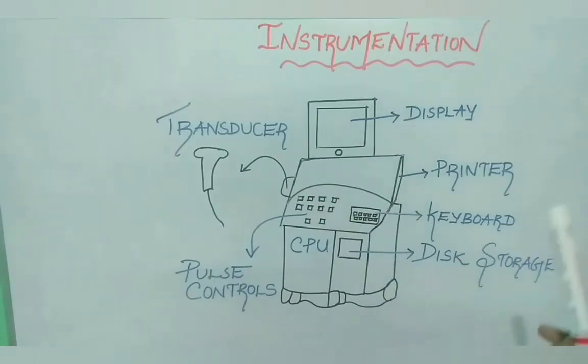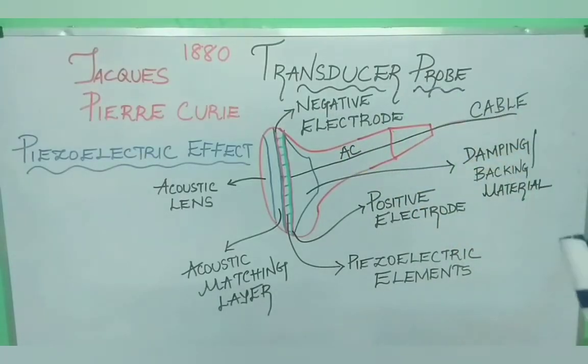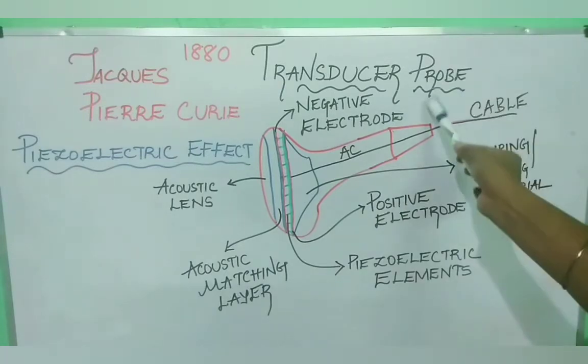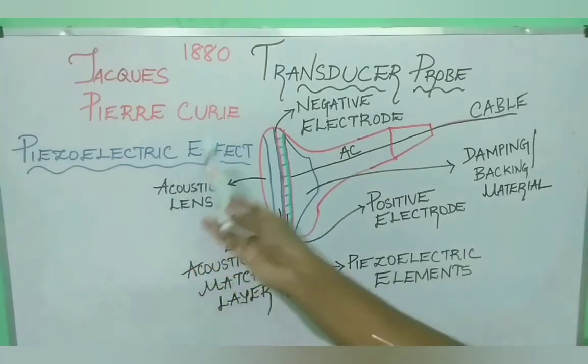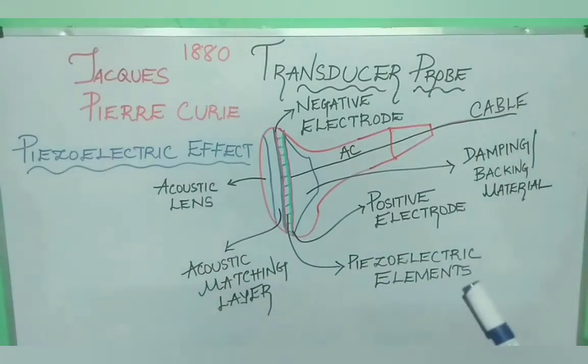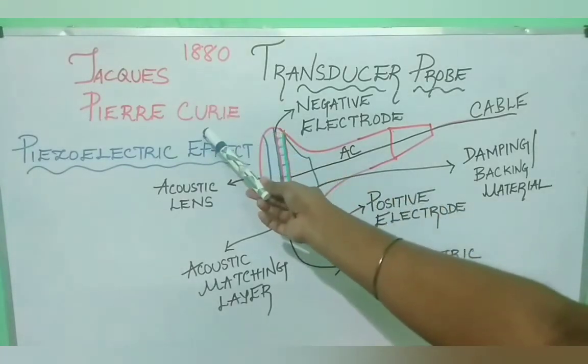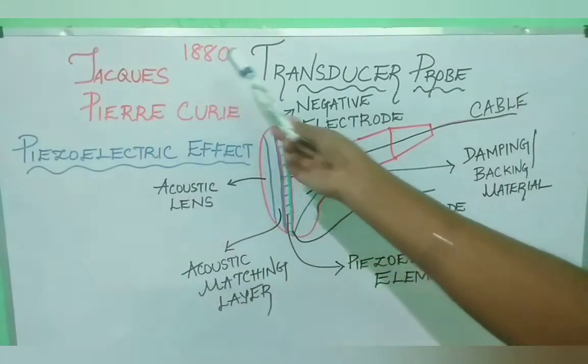Now let's see everything in detail. Transducer probe is the main handheld part of the ultrasound machine. This part plays an important role in the projection as well as detection of ultrasound waves, which means they act as both transmitter and receiver by a principle called piezoelectric effect or pressure electricity effect. This effect was discovered by Jacques and Pierre Curie in the year 1880.